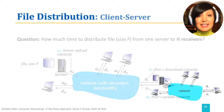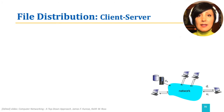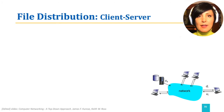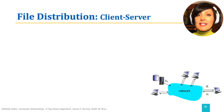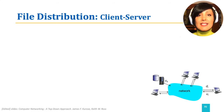In client-server architecture, for each client that requests the file, the server needs to upload the file for the client to download it. Therefore, for N users, the server uploads the file N times and each of the N clients downloads it.